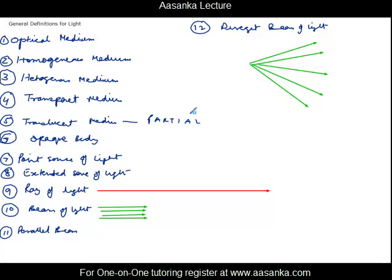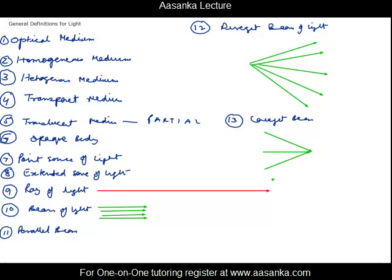When you say convergent beam, instead of opening up the rays close down and come to meet at a point. So rays coming and meeting at a point form a convergent beam, whereas rays appearing to move away from a point form a divergent beam.